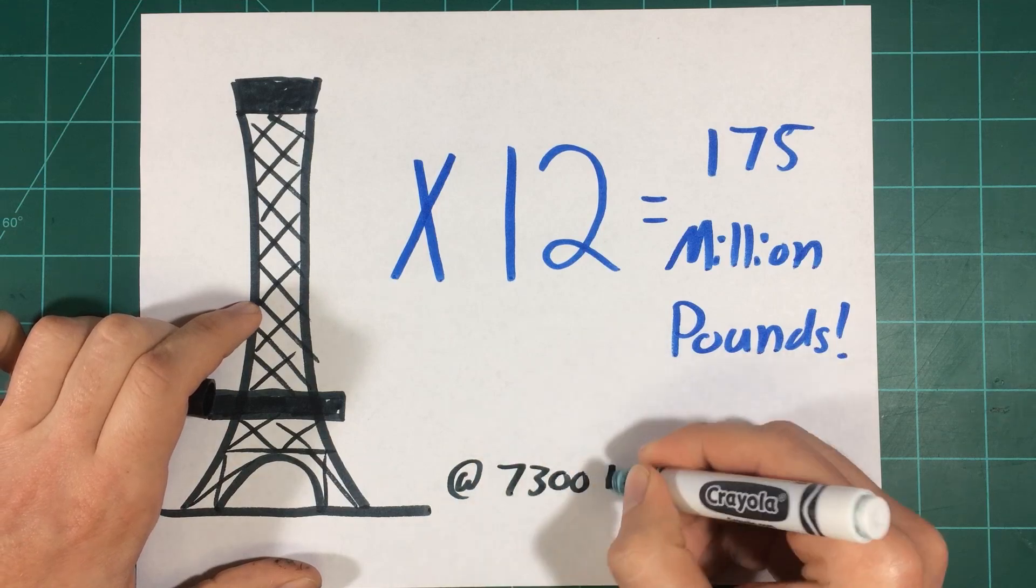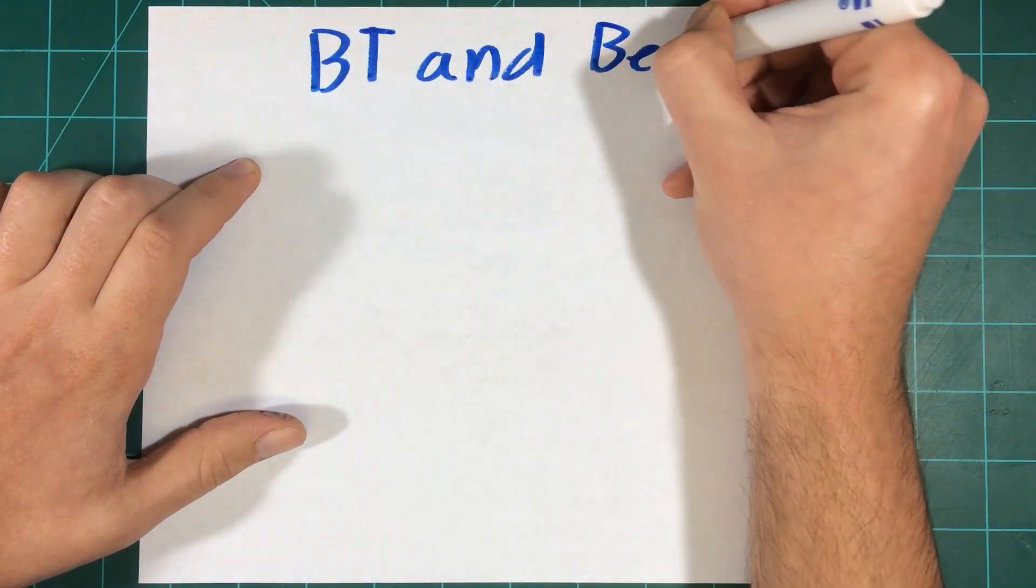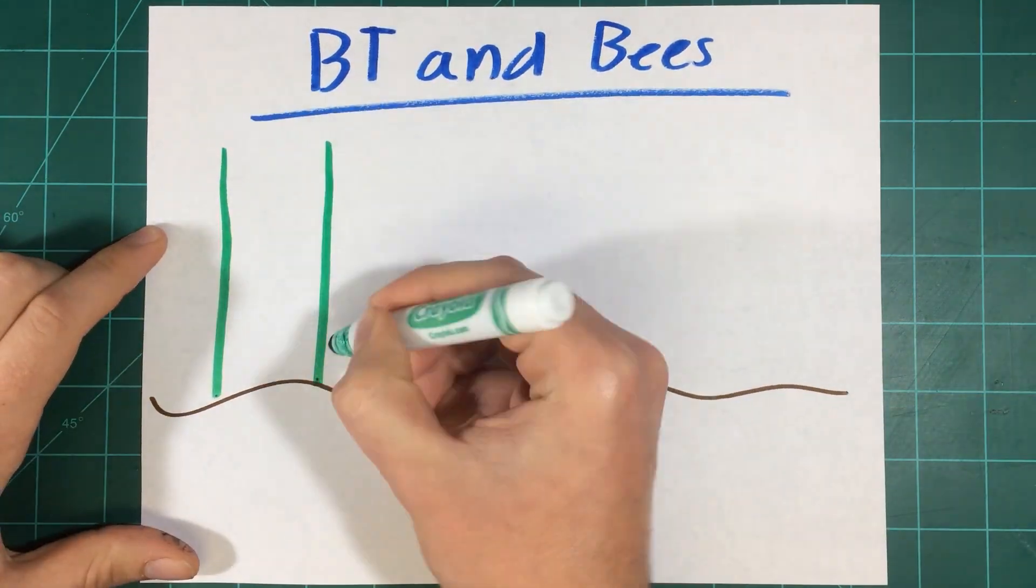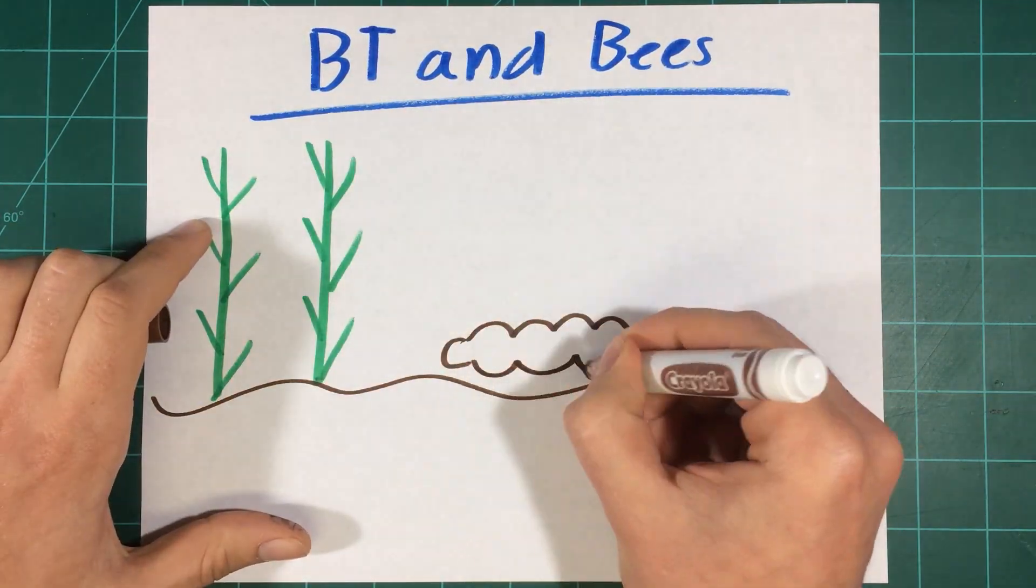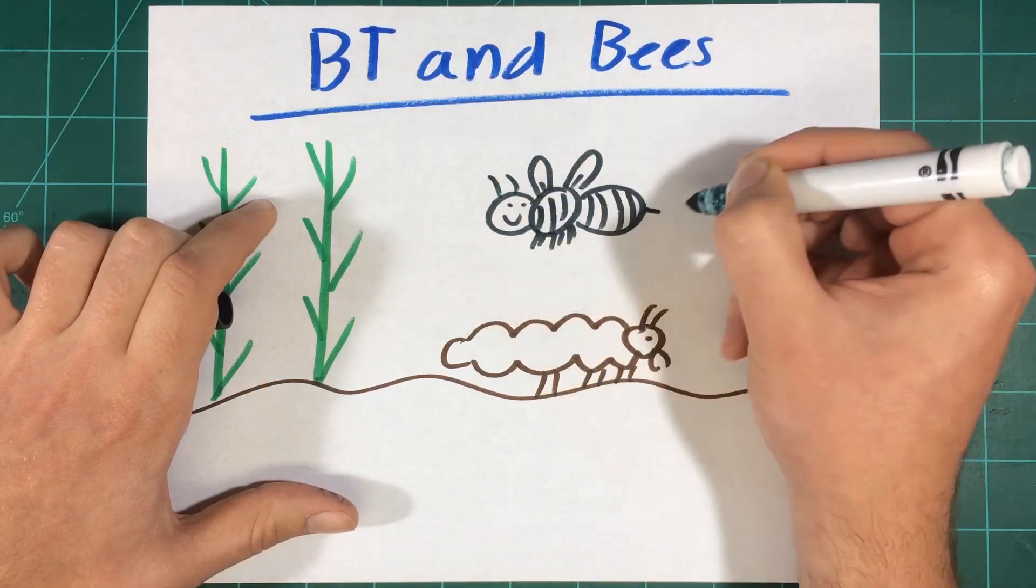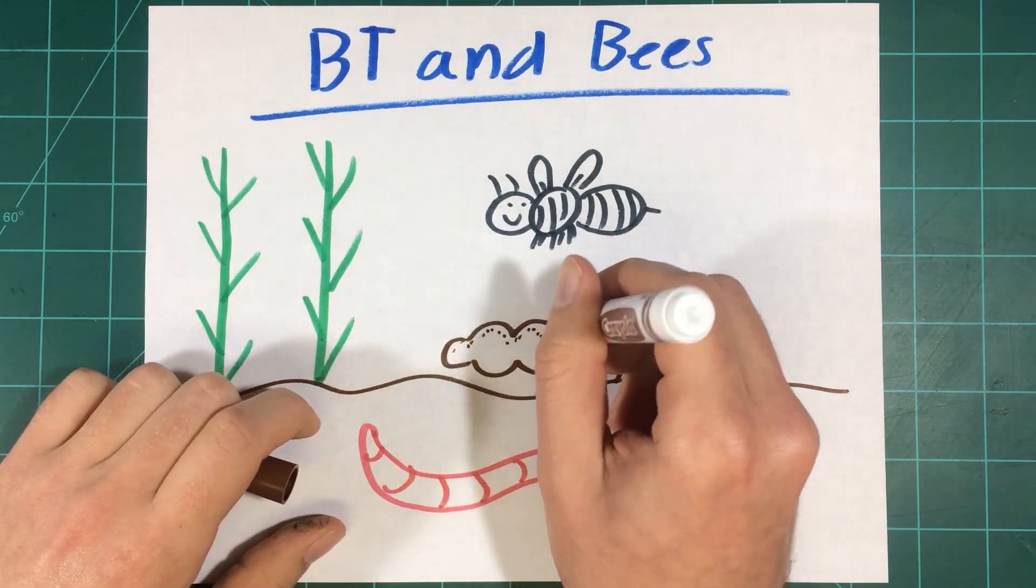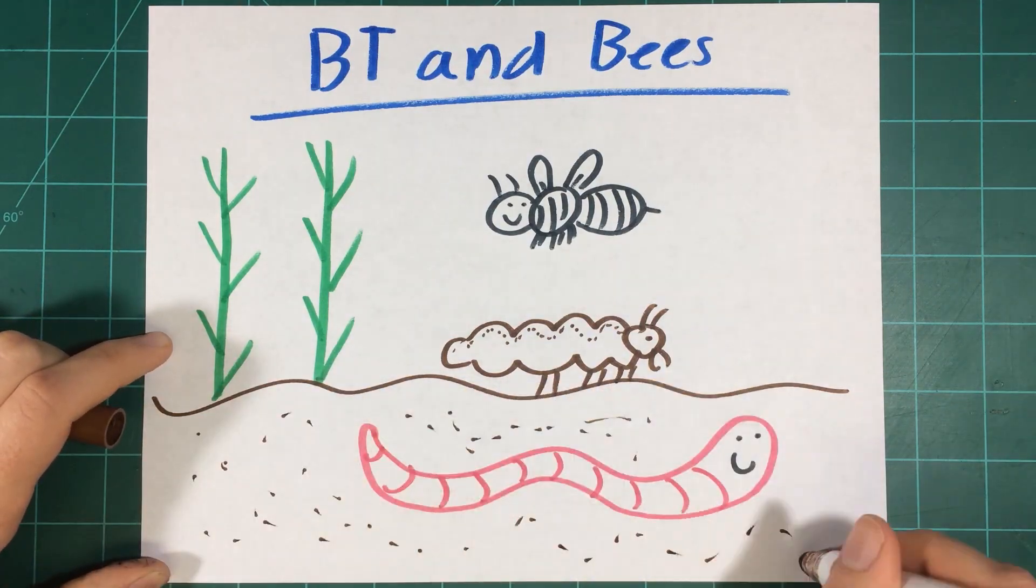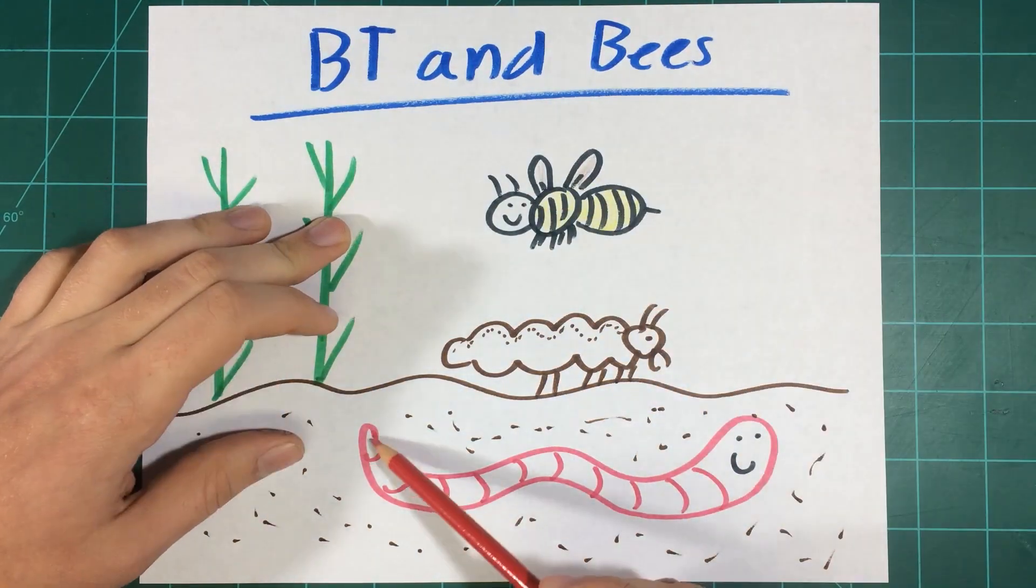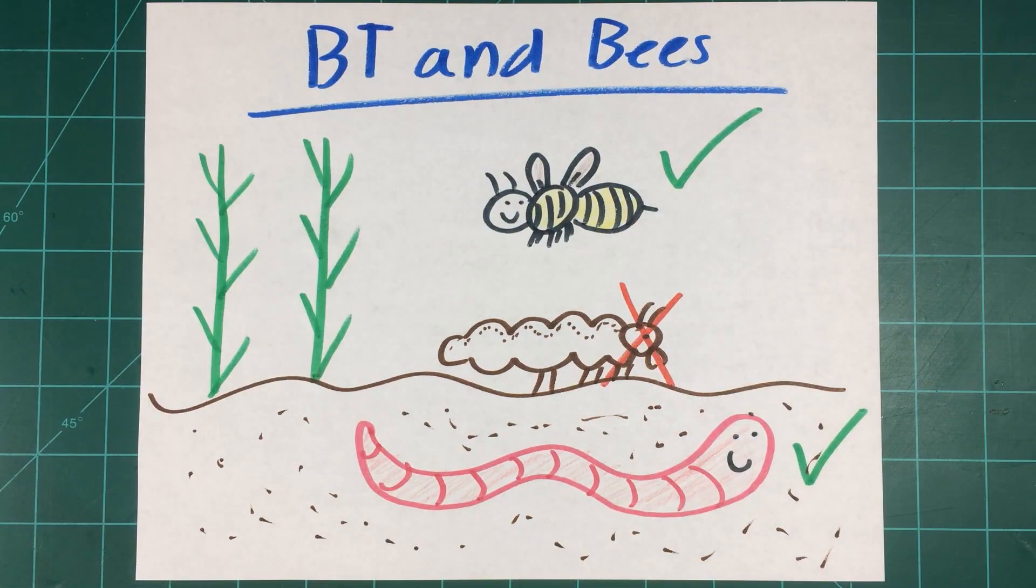The specificity of the BT proteins to caterpillar pests ensure only the target pests like corn earworm and European corn borers are killed by the corn's systemic insecticide. Since farmers of BT corn don't have to frequently spray with broad-spectrum pesticides, beneficial insects such as bees, earthworms, butterflies, and ladybugs remain unharmed in BT fields.